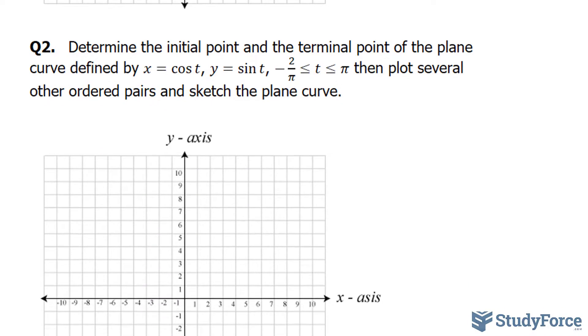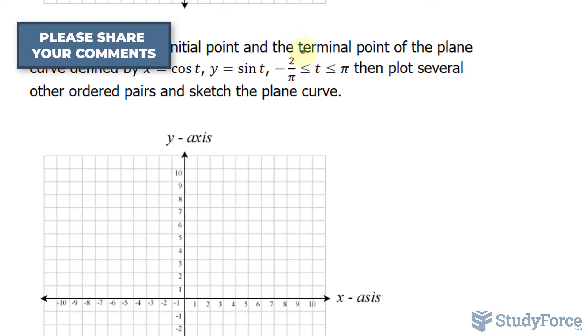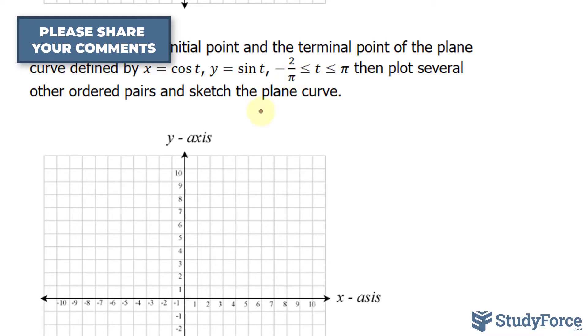Let's move on to question number 2. Determine the initial point and terminal point of the plane curve defined by x is equal to cosine t, y is equal to sine t in the intervals negative pi over 2, less than or equal to t, and t is less than or equal to pi. Then plot several other ordered pairs and sketch the plane curve.